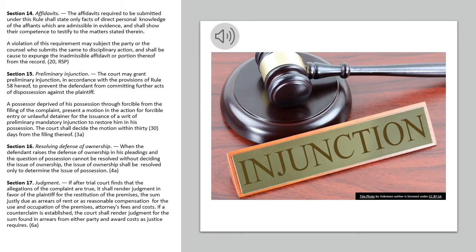Section 17. Judgment. If after trial the court finds that the allegations of the complaint are true, it shall render judgment in favor of the plaintiff for the restitution of the premises, the sum justly due as arrears of rent or as reasonable compensation for the use and occupation of the premises, attorney's fees, and costs. If a counterclaim is established, the court shall render judgment for the sum found in arrears from either party and award costs as justice requires.